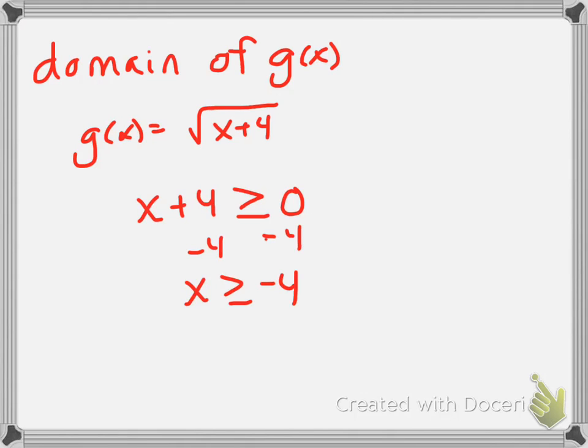So x is greater than or equal to negative 4 will be my domain. Or if you want interval notation, we'll say negative 4 to positive infinity. So now that we understand the domain of g(x), let's look at the composite function.